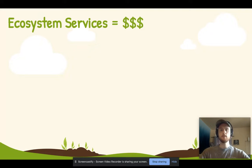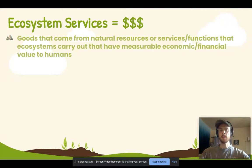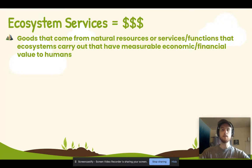Ecosystem services are either goods that are taken from natural resources, or services or functions that ecosystems do which have some sort of measurable economic or financial value to humans. So we can actually quantify them in terms of dollars, and we'll talk about the four categories of ecosystem services next.